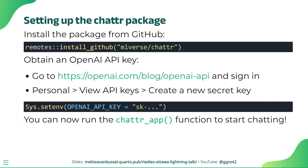The Chatter package is really new, so to install it, you'll need to install it from GitHub. To do this, you can use the install_github function from the remotes package. To start using ChatGPT, you'll need to provide your OpenAI API key.